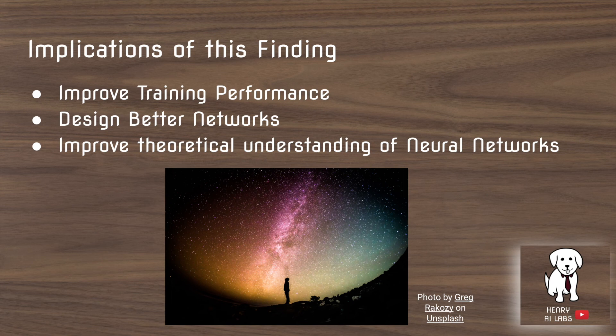So the implications of the lottery ticket hypothesis. For one, it improves the training performance. If you can train it faster, that's always good. Additionally, it helps you do this hyperparameter research around miscellaneous things outside of the network if you can train it faster. This helps us design better networks and also we have a better understanding of what might be happening with neural network training.